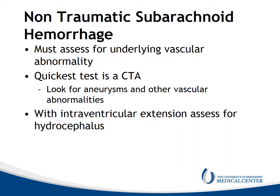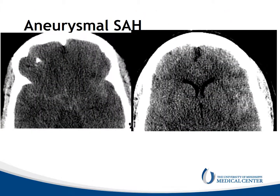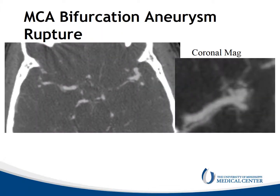Non-traumatic subarachnoid hemorrhage must be assessed, and one needs to look for an underlying vascular abnormality. The fastest test is a CTA, looking for aneurysms or other vascular abnormalities. If there's intraventricular extension, assess for hydrocephalus. Here we see hemorrhage in the suprasellar cistern and extending into the sulci in the region of the left sylvian fissure. This was non-traumatic. CTA was performed and showed abnormality at the left middle cerebral artery bifurcation — this is a ruptured MCA aneurysm.